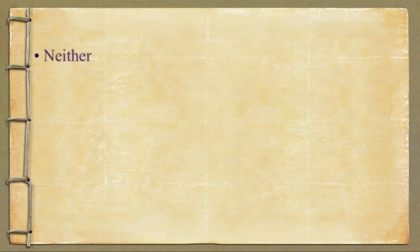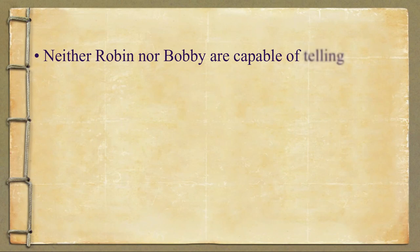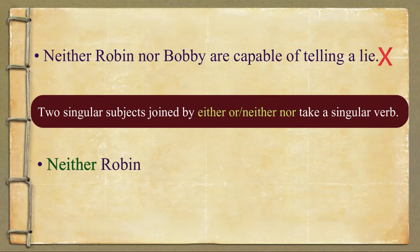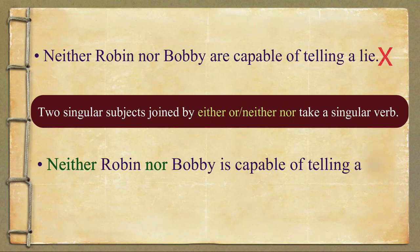The next one is: 'Neither Robin nor Bobby are capable of telling a lie.' Please note, two singular subjects joined by either/or or neither/nor take a singular verb. Now repeat the correct sentence after me: 'Neither Robin nor Bobby is capable of telling a lie.'